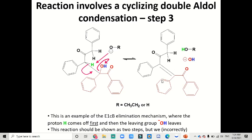This is an example of an elimination E1CB mechanism where the proton comes off first, and then the leaving group always leaves the reaction. It is very important for you to notice that this reaction should be shown as a two-step mechanism, but we incorrectly showed this here as a one-step mechanism, so make sure that this is shown separately as a two-step mechanism.